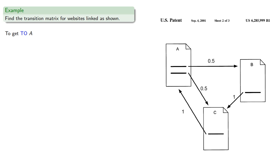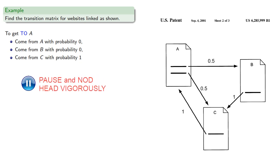From B with probability 0, again there's no link that takes you from B to A. And from C with probability 1. So this means the first row will be 0, 0, 1.